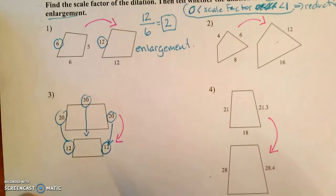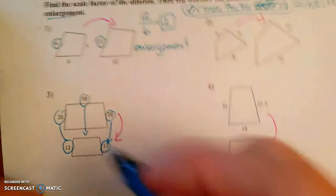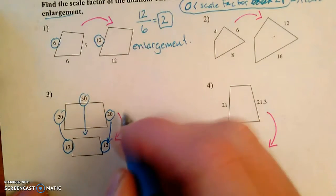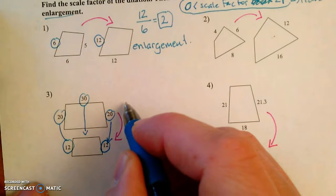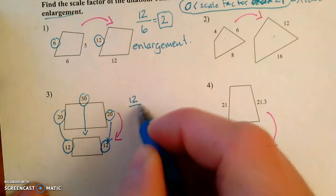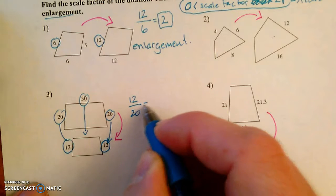This 30 would correspond to this side. We could figure out what that was if we wanted to. Okay, so after is 12 divided by before which is 20.